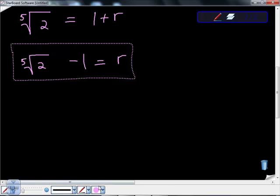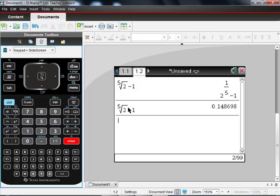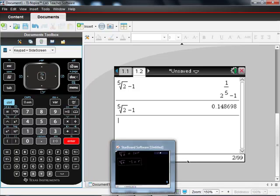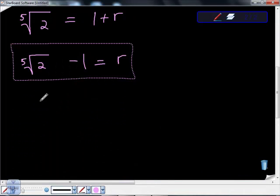So what you would do is go to your calculator. I'm just going to show you really quickly. I went to my calculator and put in our problem. This is the fifth root of 2 minus 1, which happens to be .148 whatever. I am going to round up to make sure. Under promise, over produce is the saying.